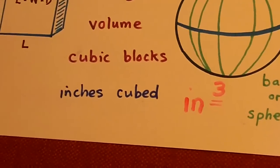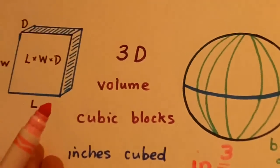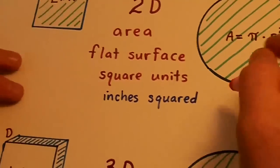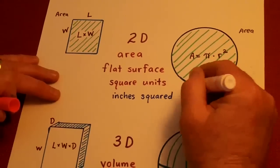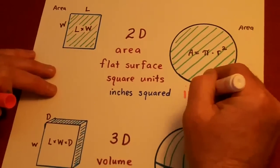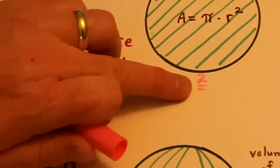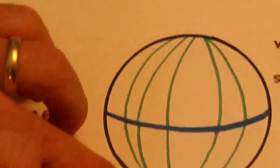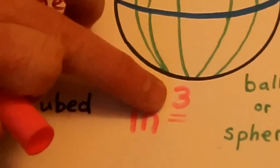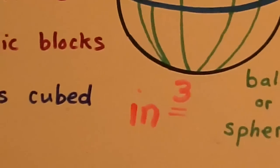Whereas our area would be inches squared, two dimensions, length and width. Here, three dimensions, length, width, and depth.